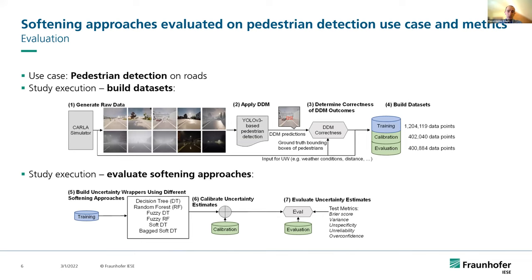To evaluate uncertainty estimation performance, we created datasets for the use case of pedestrian detection. We used the CARLA simulator to record images of pedestrians from a driving car, along with other features relevant to the uncertainty wrapper such as current weather conditions and distance between the car and pedestrians. We applied YOLO-V3 as the data-driven model to detect pedestrians, determined the correctness of YOLO-V3's outcome — whether an existing pedestrian was detected or not — and then built and calibrated uncertainty wrapper instances based on different softening approaches, evaluating them by means of the prior score and its subcomponents.